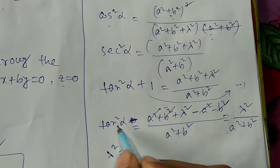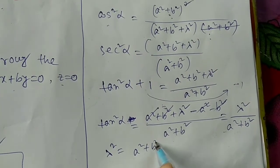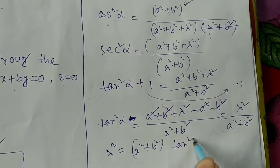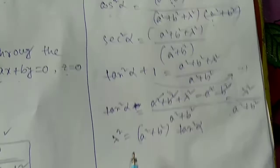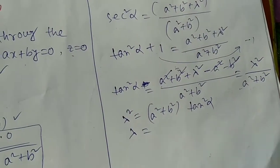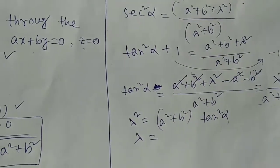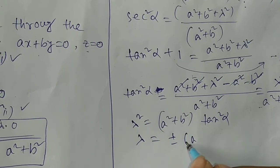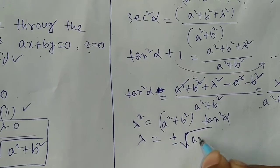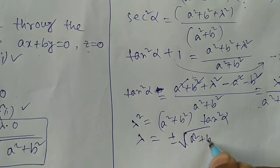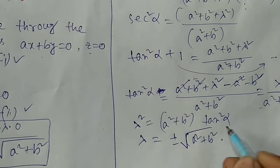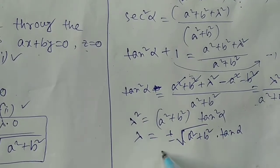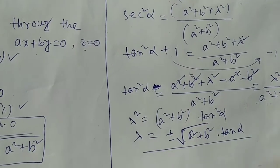So lambda squared equals to (a squared plus b squared) times tan squared alpha. Therefore, lambda equals to plus or minus the square root of (a squared plus b squared) times tan squared alpha, which simplifies to plus or minus root(a squared plus b squared) times tan alpha. We now have the value of lambda.